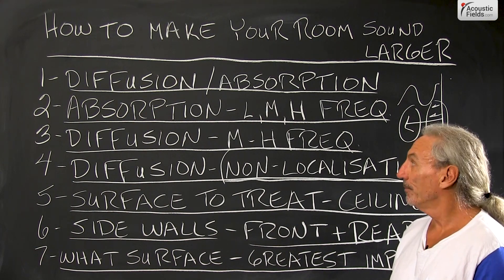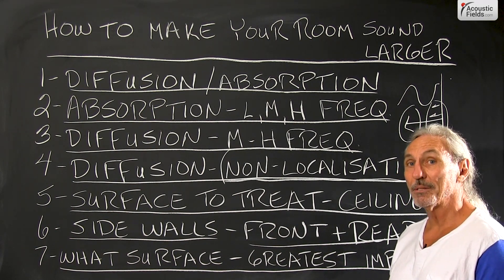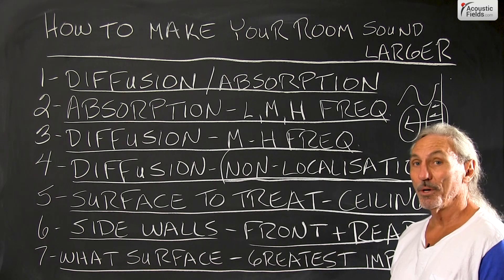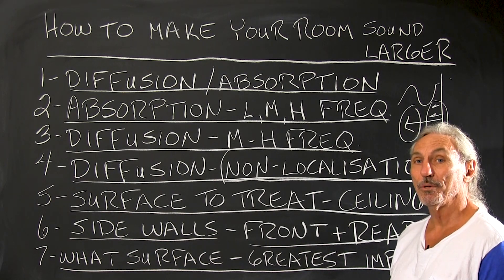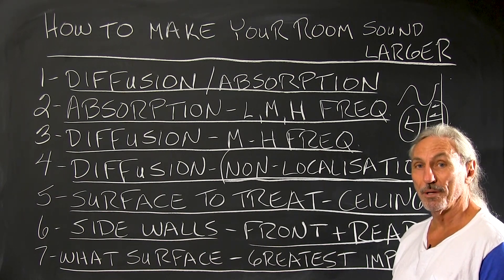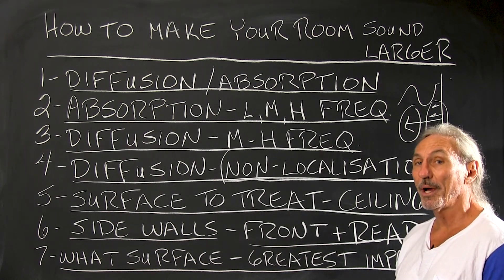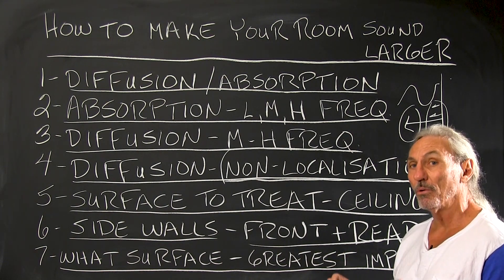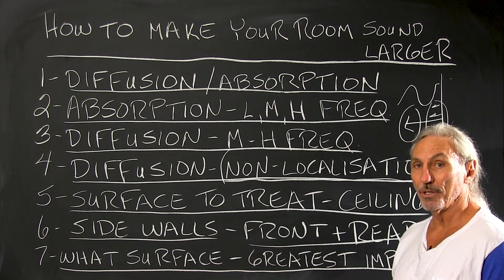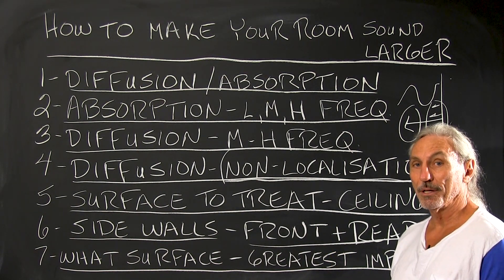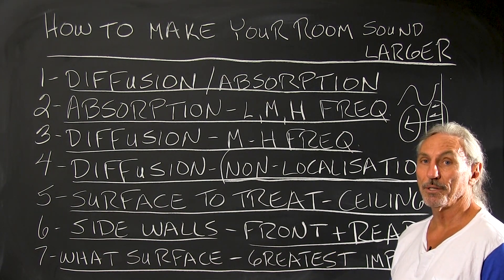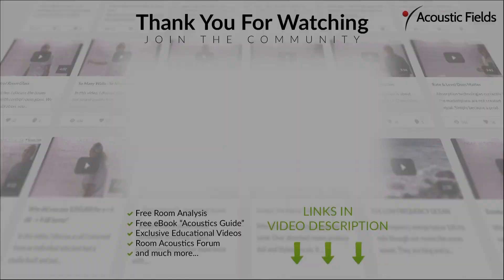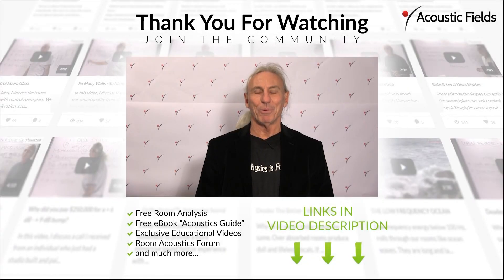So ceiling is a good place to start because it's usually the shortest dimension, and then front and rear walls in most other rooms. So hope that helps. There are ways to make your room sound larger, and the one treatment that can do it better than all the others is diffusion — quadratic diffusion in particular. It's the only true diffusion that satisfies all the criteria for a diffuse sound field. Thank you.